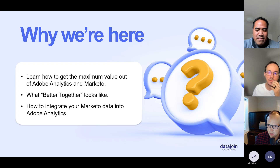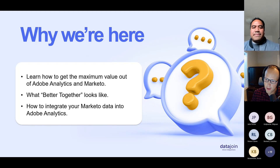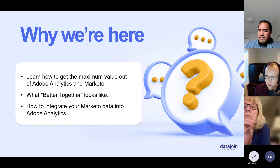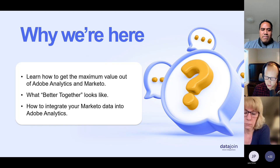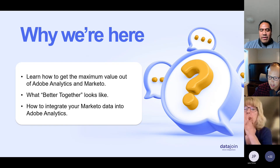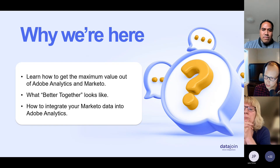Sam is CEO of Data Join and I'm the head of products. What we want to do today — the main goal is, if you're an Adobe Analytics user at your company and you have both of these tools, how do you get the maximum value out of them? You have two Adobe products that can synchronize and do so much with each other, but it's hard to figure out how to do that. We're going to help you figure out how to get that value, and show you what better together looks like. We'll give you an example from customers we work with in the field and then show you how to get started integrating your Marketo data into Adobe Analytics. You'll walk away with actionable items you can go out and actually do.